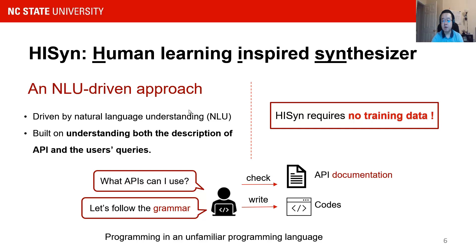The synthesizer is built on understanding the descriptions of APIs and the user intentions. By comparing the information from both sides, HySing can directly find the related APIs from the document and organize them by following the grammar. Therefore, the most significant feature of HySing is that it requires no training data. So how does HySing achieve this natural language understanding-driven approach?